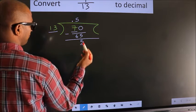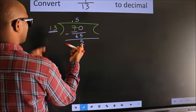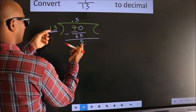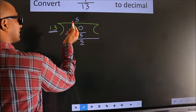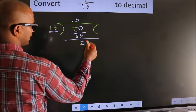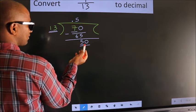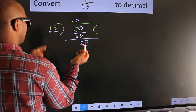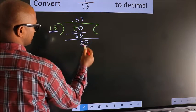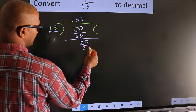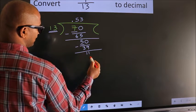Here we have 5, here 13. 5 is smaller than 13, and we already have the decimal, so we can directly take 0, making it 50. A number close to 50 in the 13 table is 13 threes — 39. Now we subtract and we get 11.